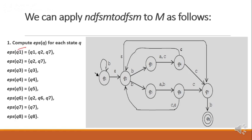So, always remember: this state Q1 has to be added first, then from Q1 to Q2 by epsilon, from Q2 to Q7. No further states can be added. For epsilon closure of Q2: first add Q2, then from Q2 taking epsilon transition, we can add only one state, Q7. So epsilon closure of Q2 is Q2 and Q7. Epsilon closure of Q6: from Q6 taking epsilon transition, only one path gives Q2. From Q2 taking epsilon transition we get Q7. So epsilon closure of Q6 is Q6, Q2, and Q7. For other states with no epsilon transitions: epsilon closure of Q3 is Q3, epsilon closure of Q4 is Q4, Q7 is Q7, and Q8 is Q8.